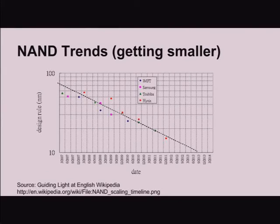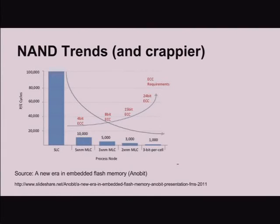This graph from Wikipedia shows trends in NAND from 2007 to 2013 — process nodes went from the 50–60 nanometer range down to the 10 nanometer range. It's not really important to know the exact sizes, but it is important to know it's small and getting smaller — and as it's getting smaller, it's getting crappier. SLC had a lot of PE cycles and almost no ECC, maybe one bit of error correction. These are successively newer technologies, and you can see the ECC requirements are going up rather substantially — 24 bits of ECC is a lot.